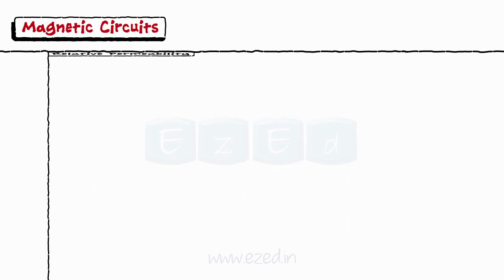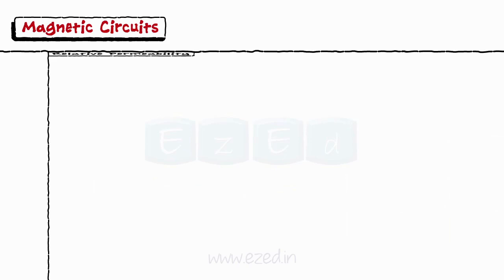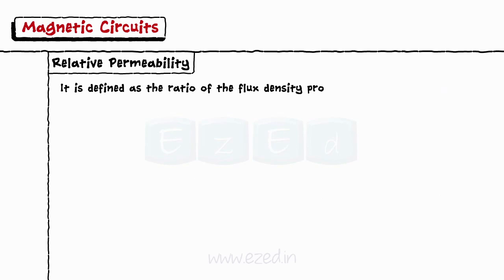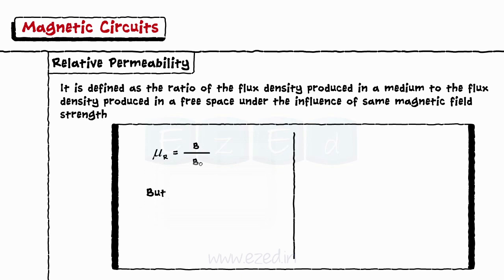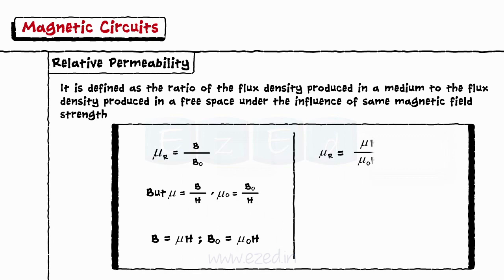The second type is relative permeability. It is defined as the ratio of flux density produced in a medium to the flux density produced in free space under the influence of the same magnetic field strength. It is given by mu_R = B / B₀. It is a unitless quantity. Writing the equations for the respective permeabilities, we get B = mu × H and B₀ = mu₀ × H. Substituting these into the formula for relative permeability, we get mu = mu_R × mu₀.